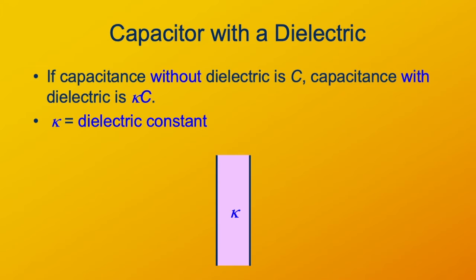This is often characterized by a dielectric constant, kappa, which is characteristic of the particular material the dielectric is made out of. Kappa is defined so that if the capacitance without the dielectric — with just a vacuum — is C, then with the dielectric you increase the capacitance by a factor of kappa. The dielectric constant kappa is the factor by which the dielectric increases the capacitance of a capacitor.